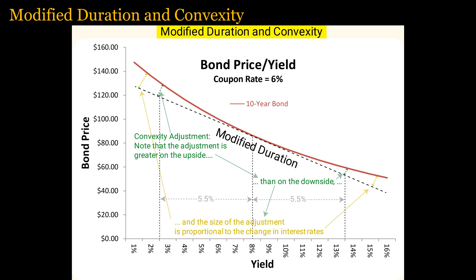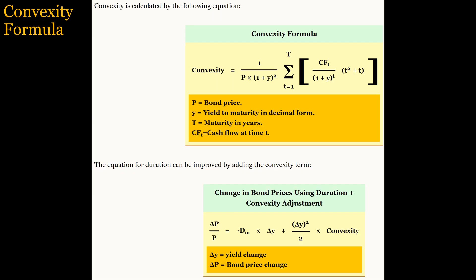This graph shows that the modified duration is the slope of the tangent line to a particular market yield, and that the discrepancy between the price-yield curve and the modified duration increases with greater changes in the interest rate. It can easily be seen that modified duration changes as the yield changes, because the slope of the line changes with different yields. The gap between the modified duration and the convex price-yield curve is the convexity adjustment, which is greater on the upside than on the downside. There are formulas for calculating convexity, but I wanted to present it so that you are aware that price estimations can be improved by adding the convexity factor.